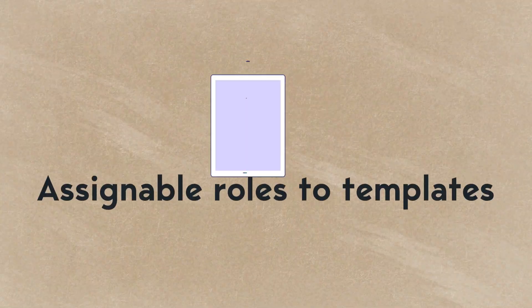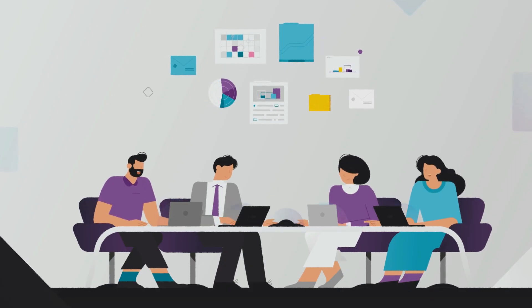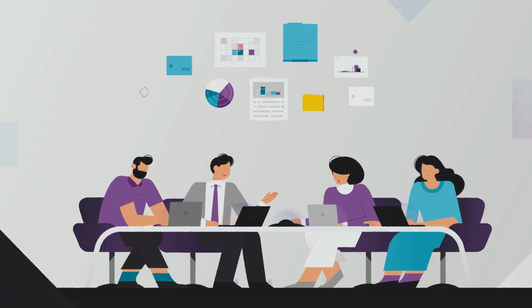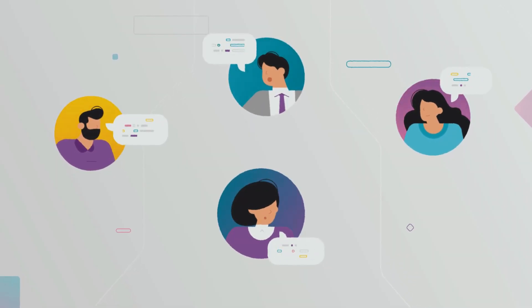The next update I'm excited about is assignee roles at the template level. This allows you to add specific roles to a template. Previously, you would have to add an actual assignee into the placeholder, which meant very defined people for each task. That's fine for small teams where no one changes roles, but often project managers and analysts change roles, or a new person assumes a role that isn't their title, so you want that flexibility.